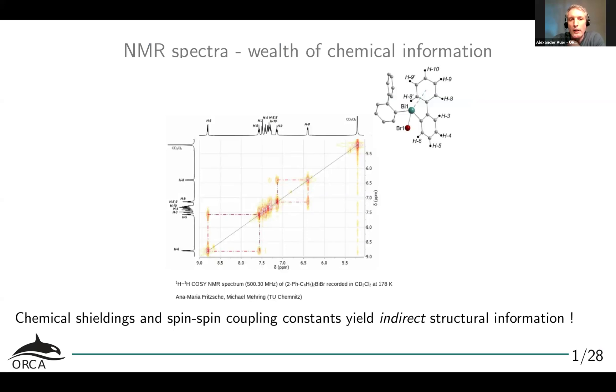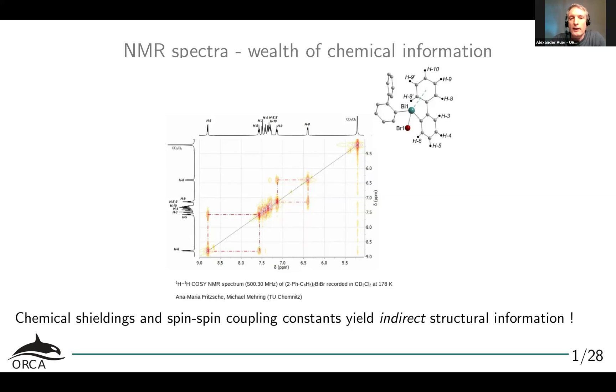I will tell you something about the capabilities to calculate NMR parameters and simulate NMR spectra. NMR spectra carry a wealth of information, for example this two-dimensional correlated spectrum where we get a lot of information in the form of chemical shieldings and spin-spin coupling constants. And while they are very sensitive and specific to a structure, they are only indirect structural information. In principle, we need a missing link between the molecular structure and the NMR parameters, and this missing link can be theory. You can take a molecular structure, XYZ coordinates, feed it into something like ORCA, obtain an NMR spectrum, and learn a lot about what the experimentalists observe in their experiments.